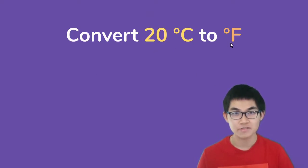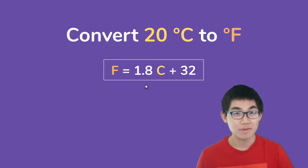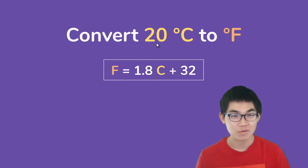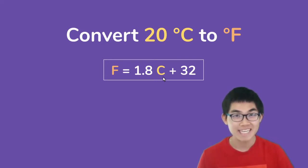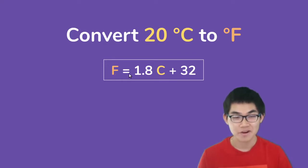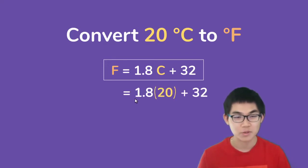Let's say you want to convert from 20 degrees Celsius into Fahrenheit. With our formula we can find F using the given C, which is 20. What we can do is substitute the number 20 into C to find F. So this whole thing will be equal to 1.8 times 20 plus 32.